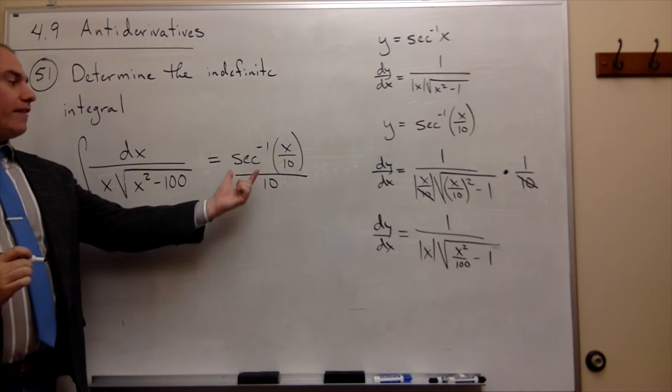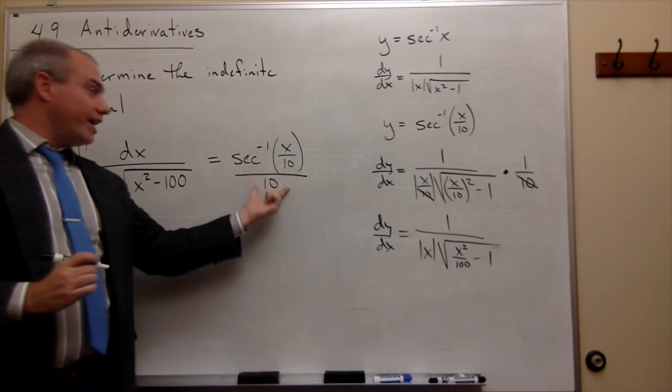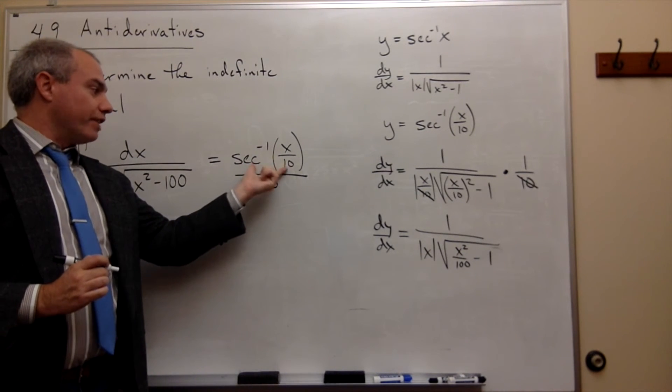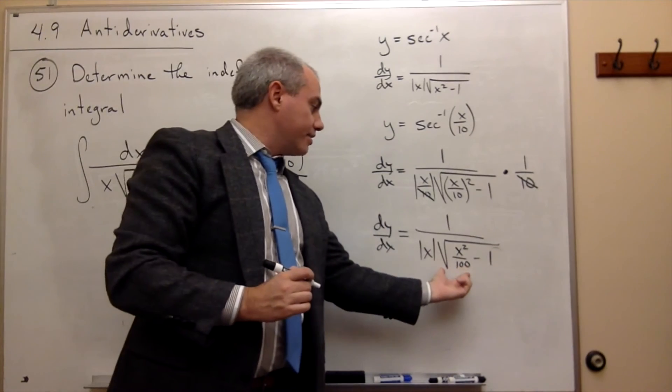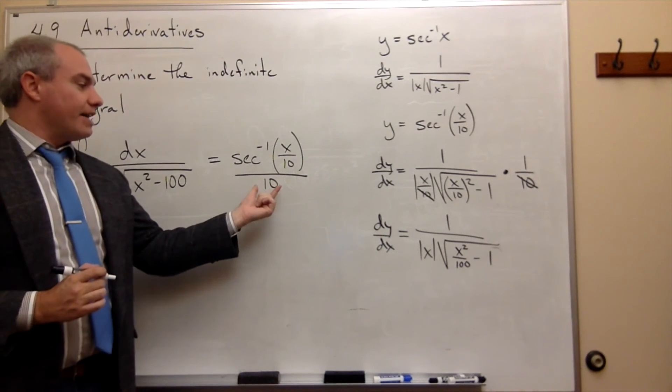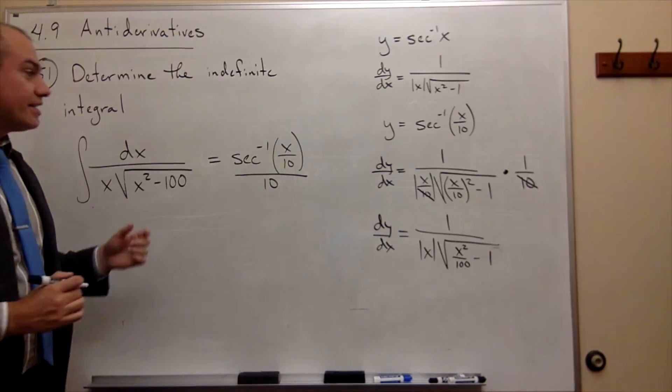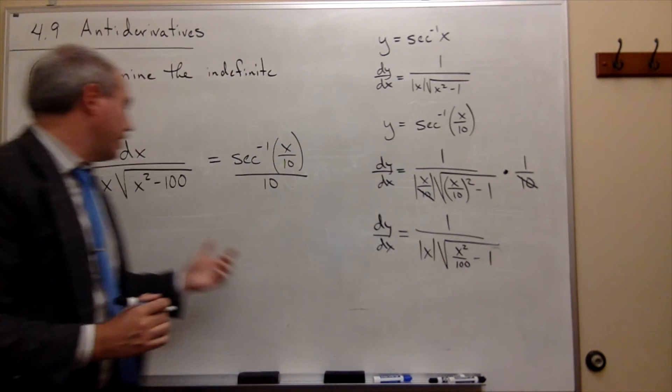Now, if I take the derivative of this, the 1/10 is just a constant, so it doesn't really matter, but the derivative here is exactly this, and when I divide that by 10, I get exactly what I want my derivative to be.